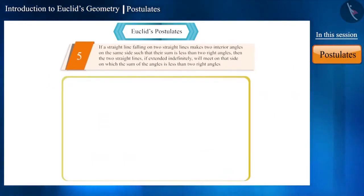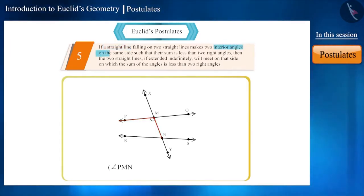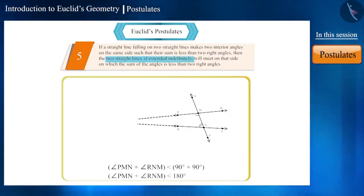This postulate says that if there are two straight lines on a paper, and now if we draw a straight line intersecting both these lines, then if this straight line makes interior angles on its one side in such a way that the sum of two angles will be less than two right angles, if we extend the two lines in the same side indefinitely, then they will meet each other at a point.